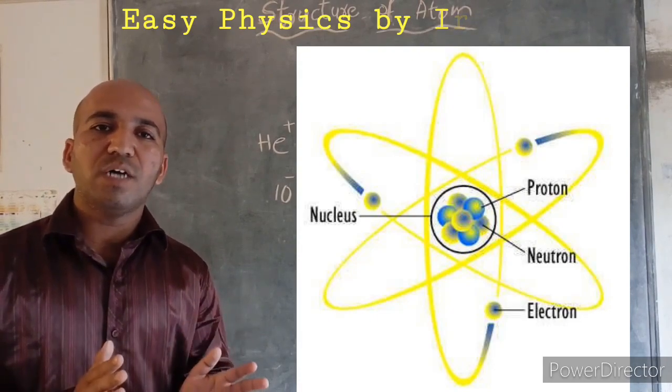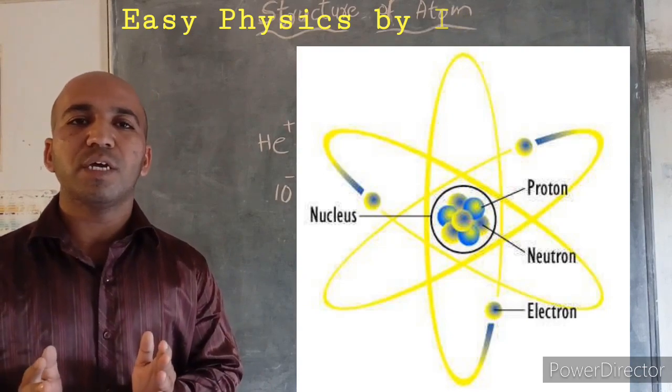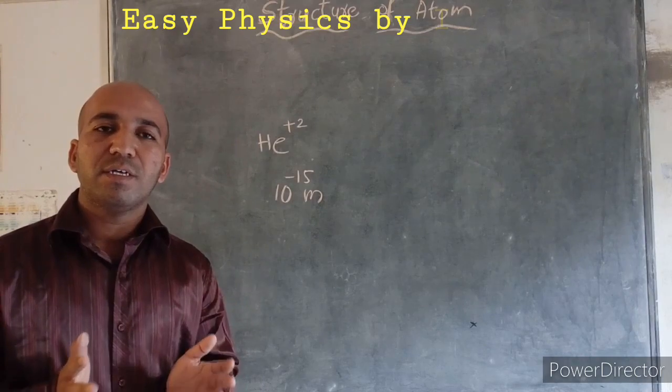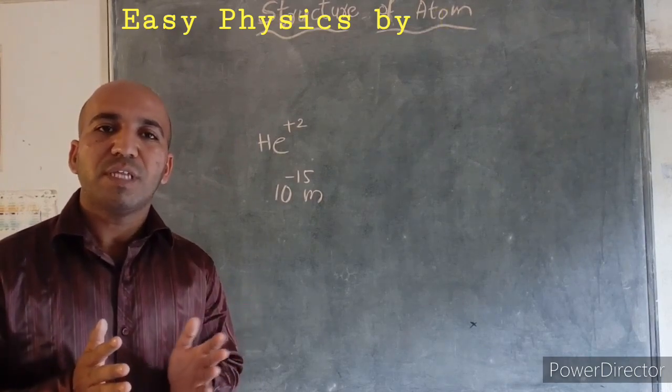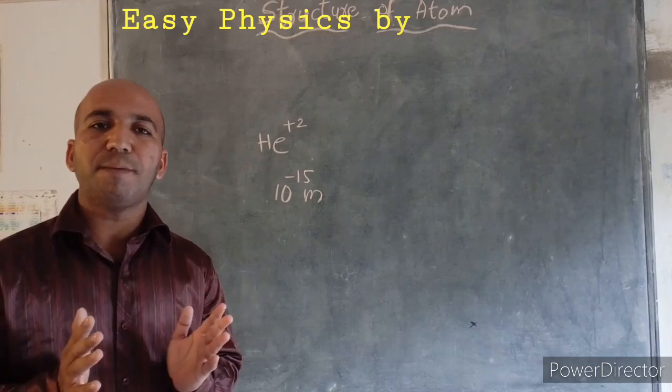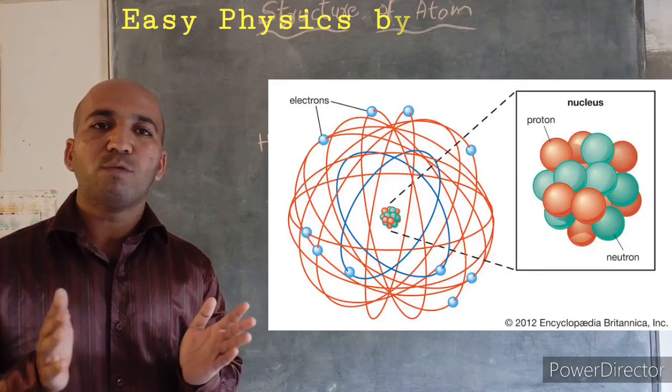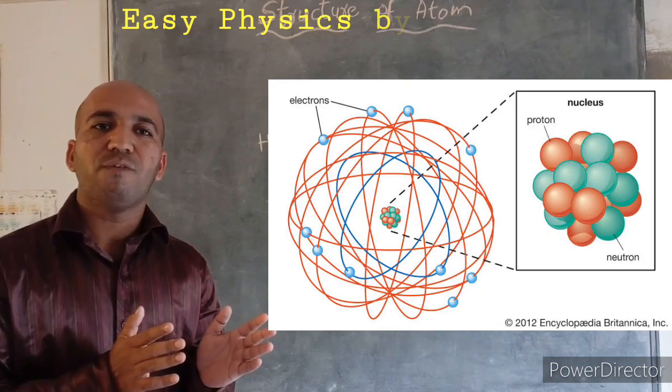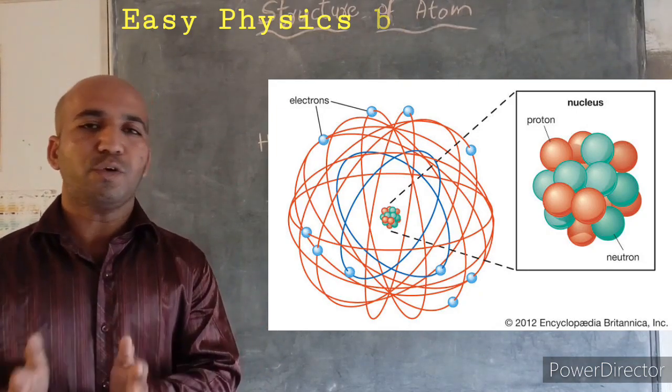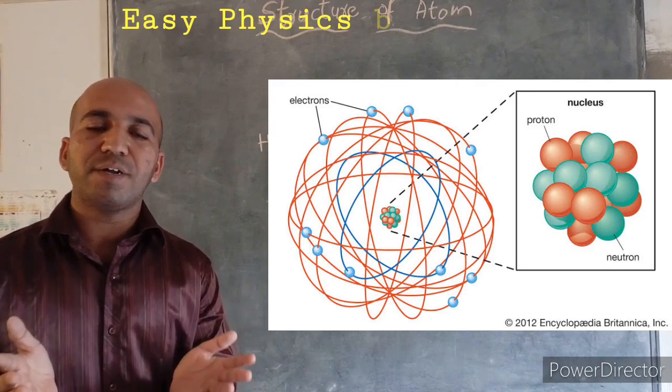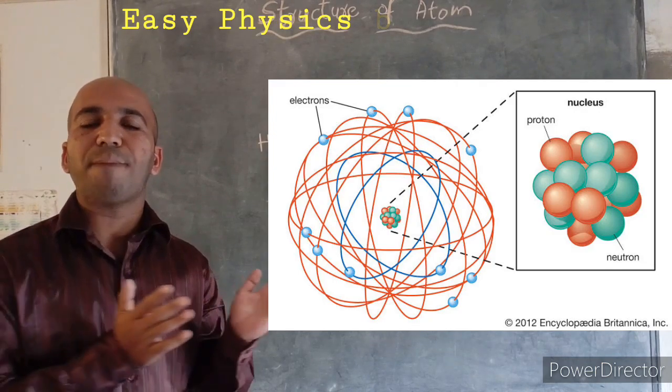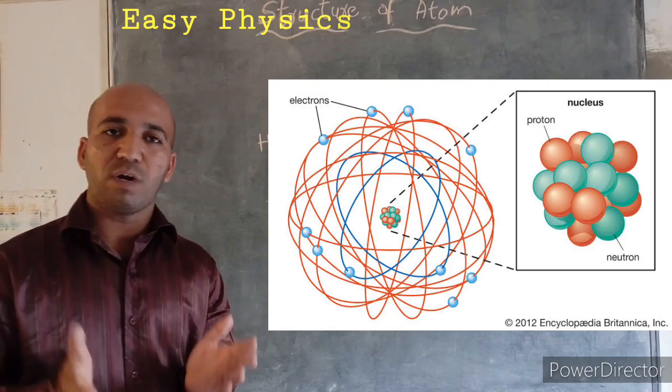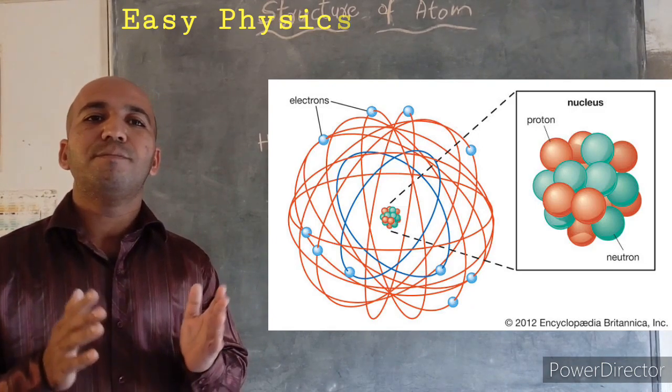And he compared his atomic model with the planetary system. That means, as the planets are revolving around the sun, then electrons also revolving around the nucleus. So he compared an atom with the planetary model. That's why Rutherford's atomic model is called as planetary model.